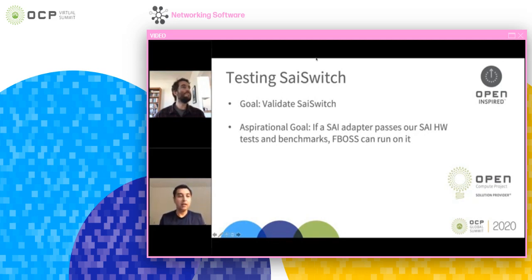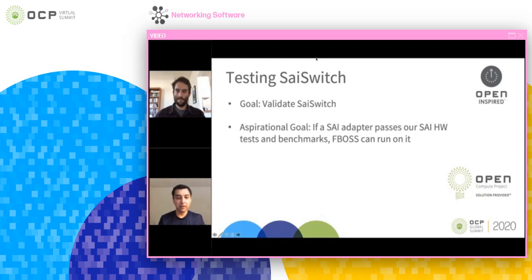Luckily, we've built a comprehensive set of tests which we run every day to validate our native hardware switch and check for any regressions. We want to port those to SAI at a hardware-agnostic level so we can run them for both our native and SAI switches. The aspirational goal is that if a SAI adapter passes our SAI hardware tests and benchmarks, FBOSS is able to run on it — it's aspirational because not every part of the FBOSS stack is covered yet, but substantially the functionality is.